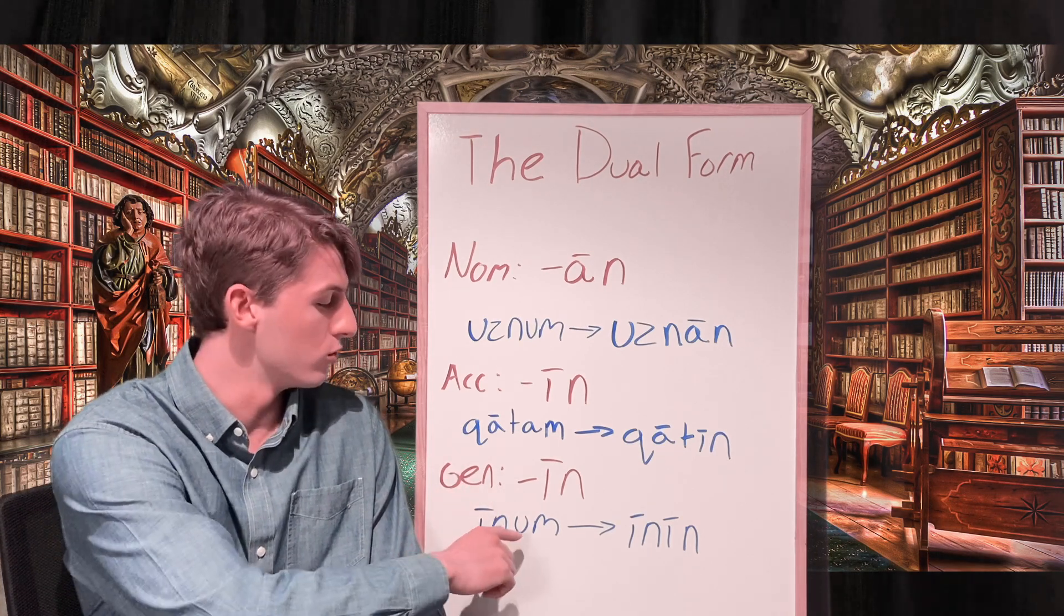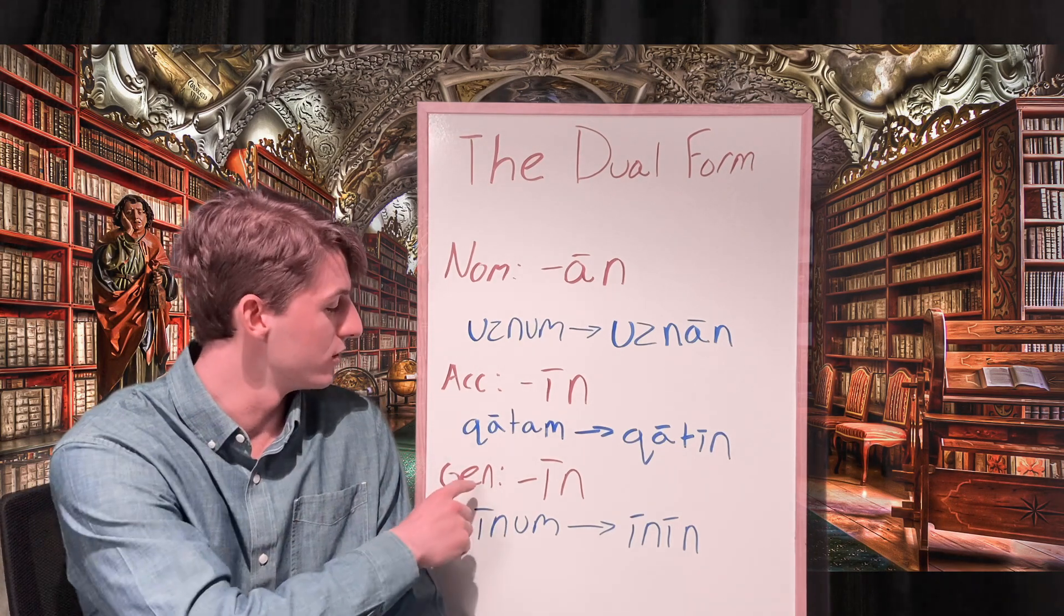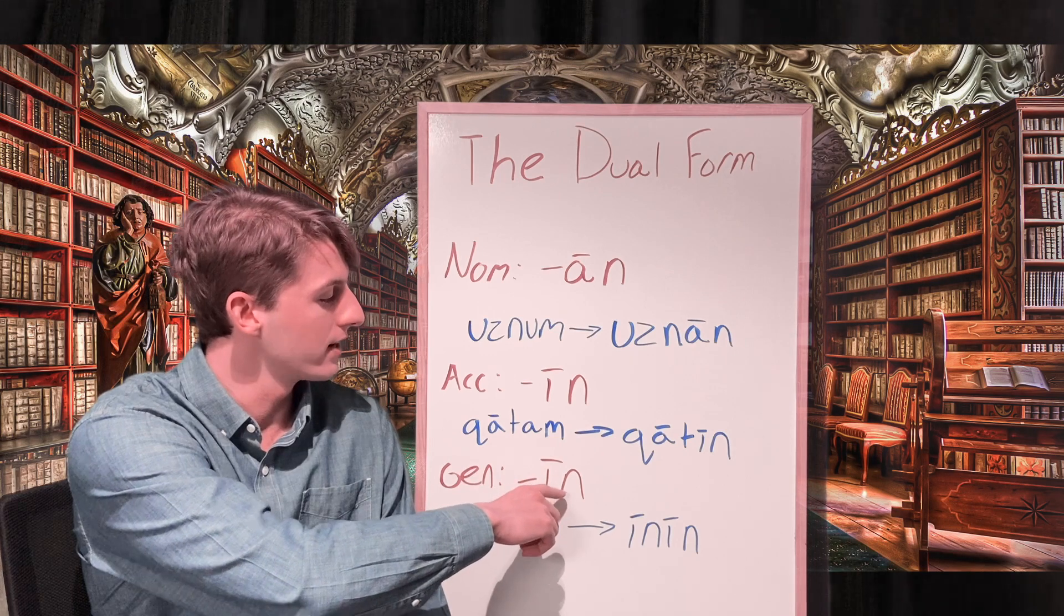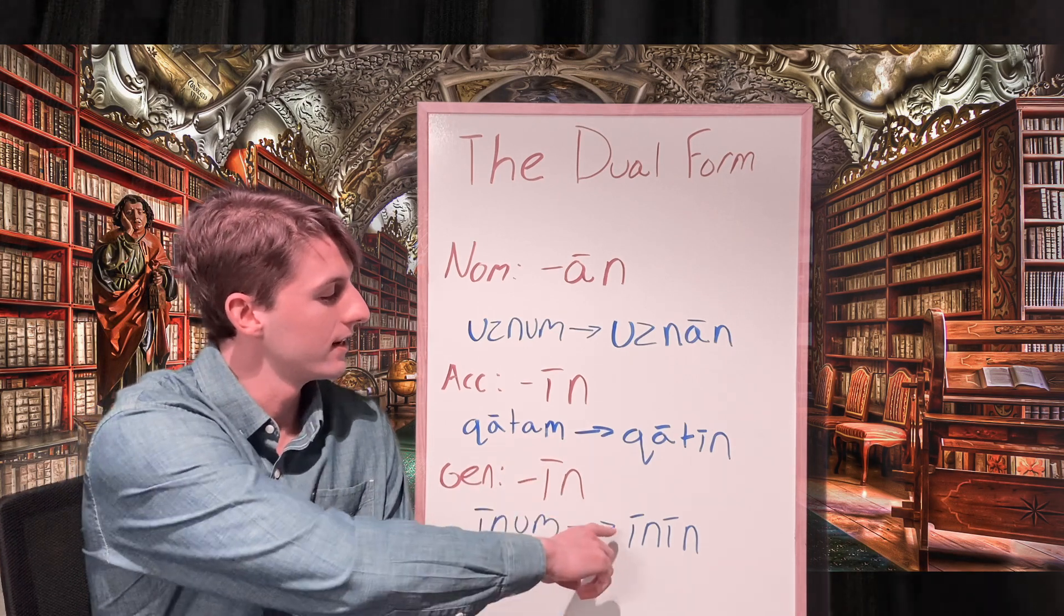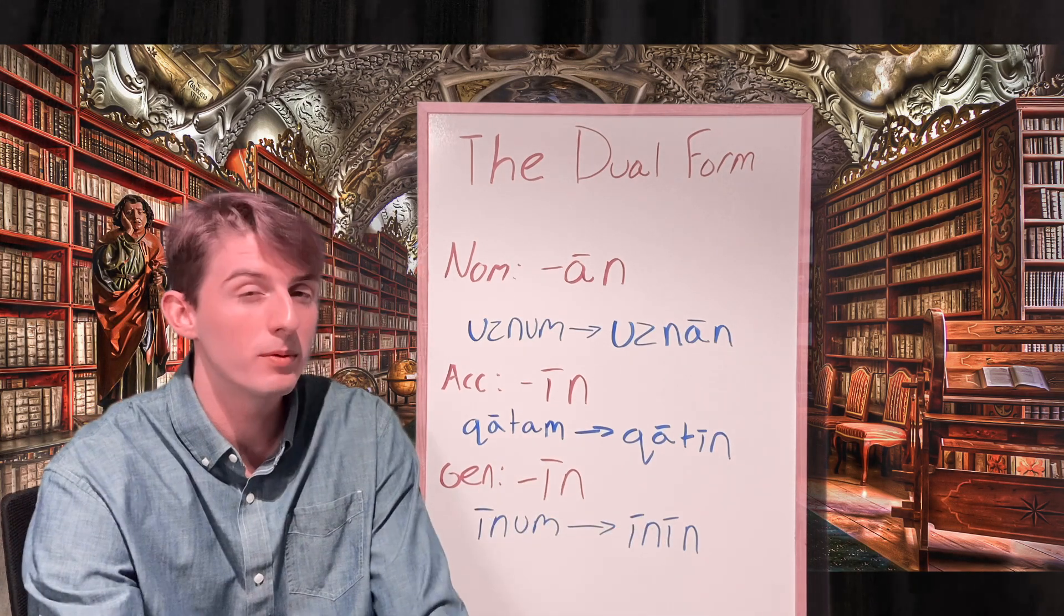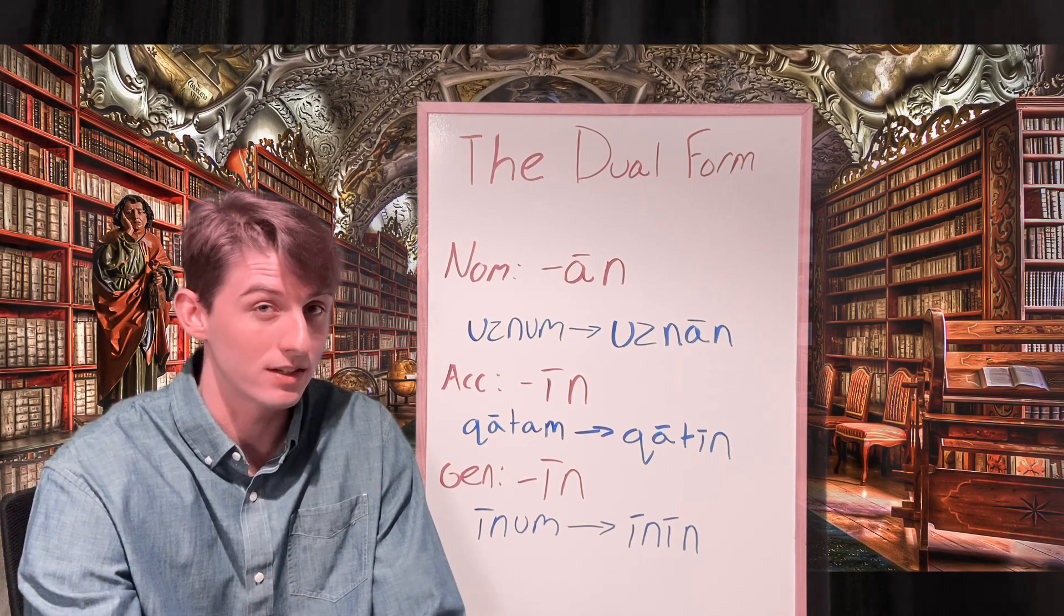Our last example comes from the word inu, which means eye. It's using the genitive ending, which is a long I and an N, to get inin, which would probably be found somewhere near a preposition because of the genitive case.